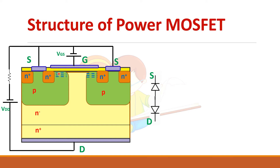The positive gate voltage will attract negative electrons to this region. These negative electrons will increase with the increase of gate-source voltage. As this voltage increases, the thickness of the layer also increases. This layer is called the inversion layer or N channel. This helps to form a channel so that current can flow from the drain region to the source region. Once a channel is formed, drain current will flow from drain to source. This is how MOSFET conducts.